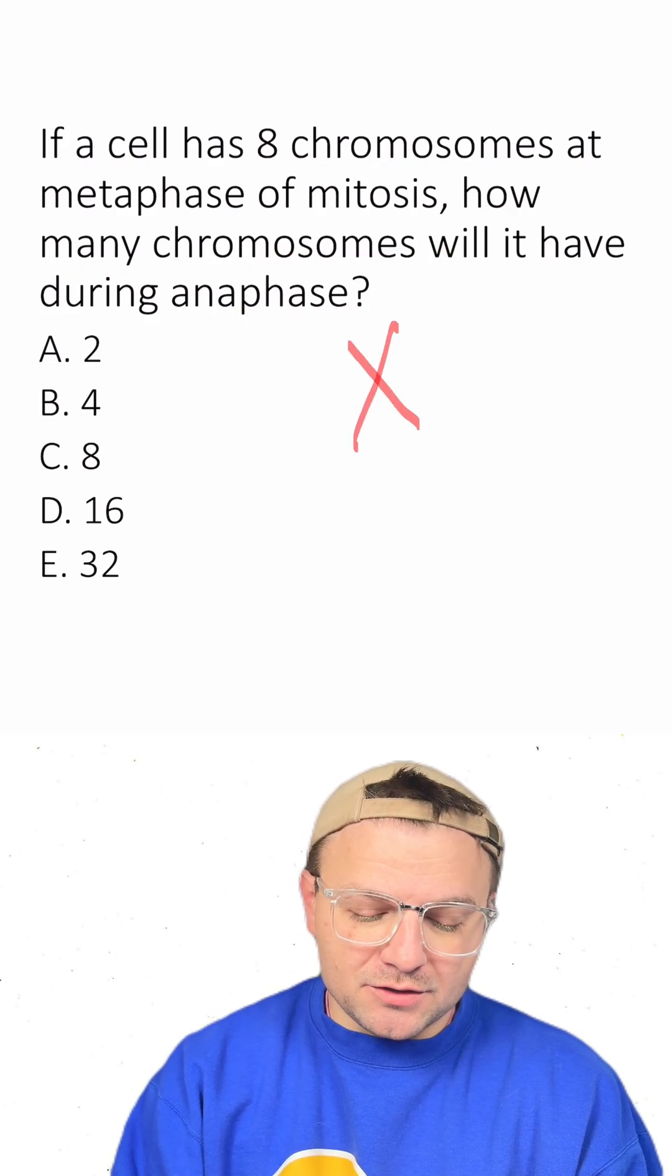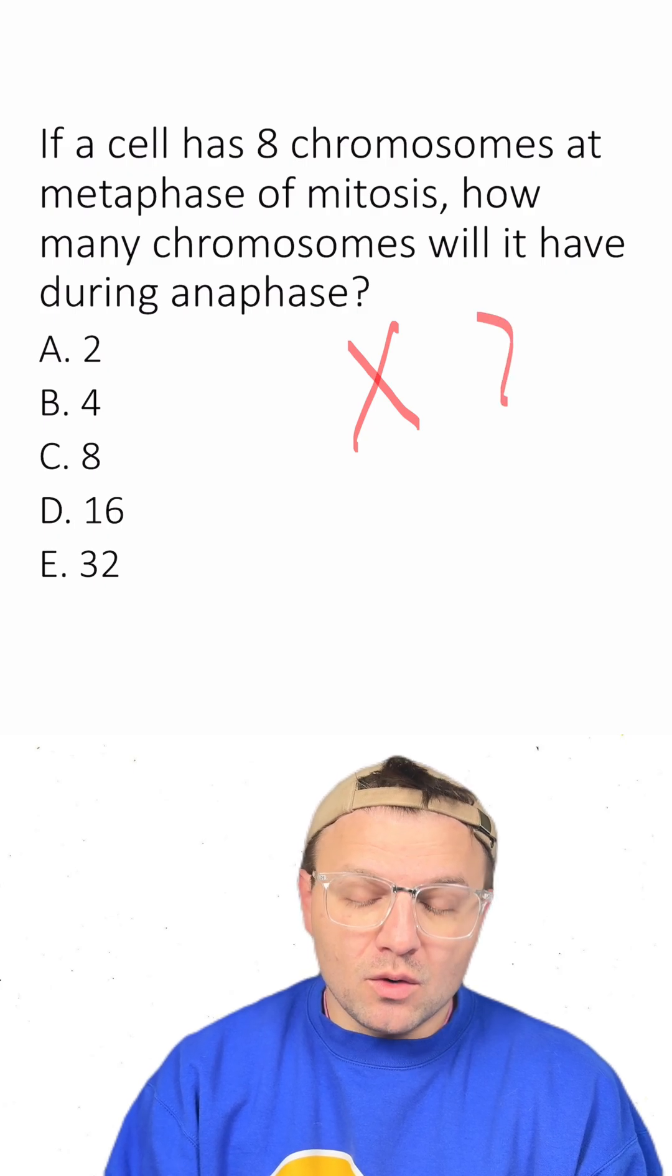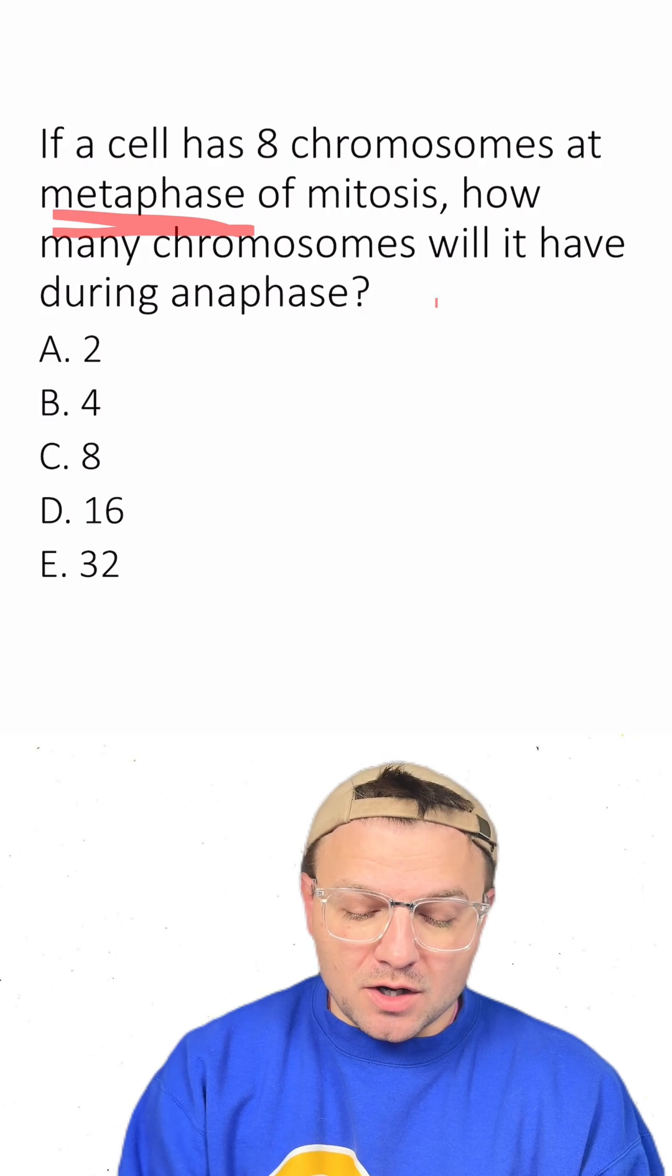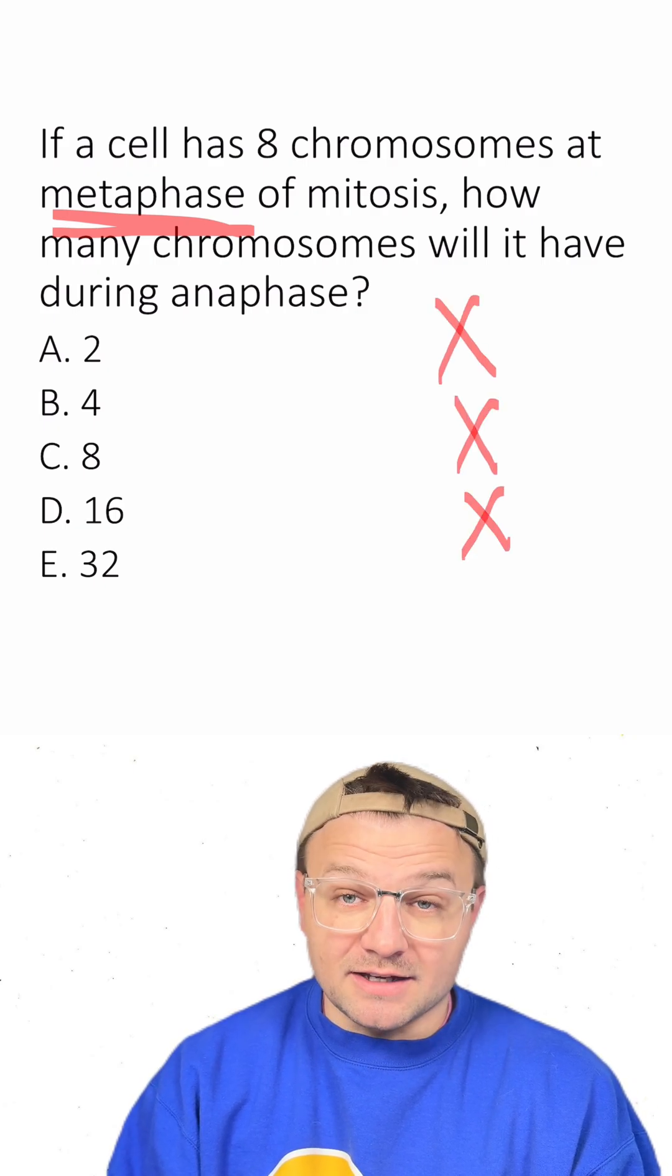Remember that chromosomes during mitosis can have two chromatids or they can have one chromatid. During metaphase, the chromosomes are going to have two chromatids and they're going to look something like this.